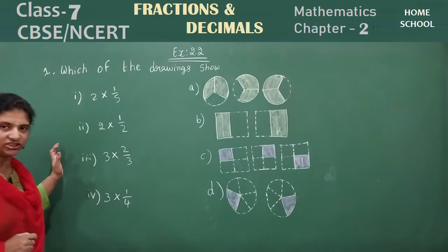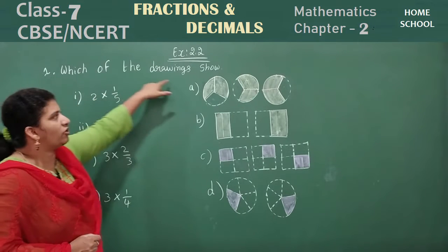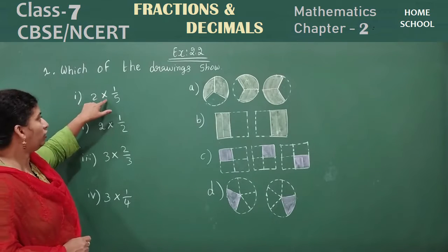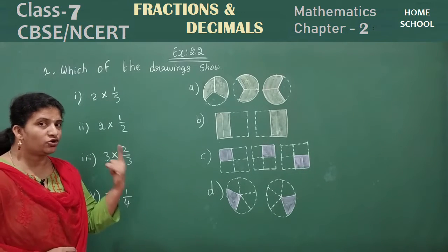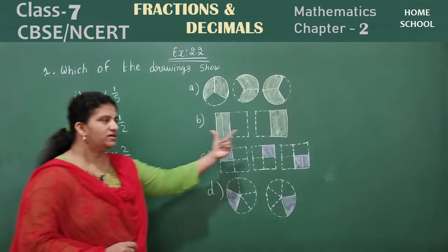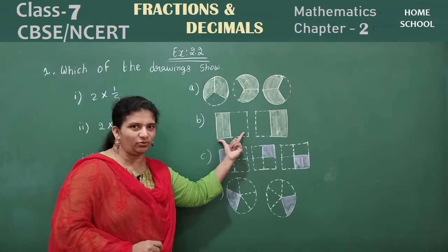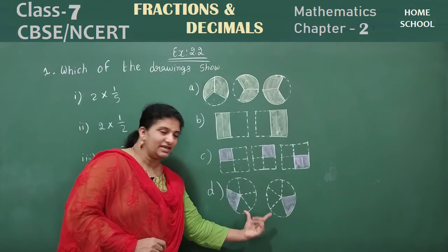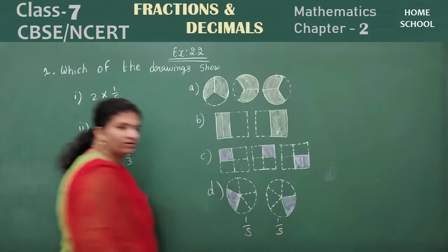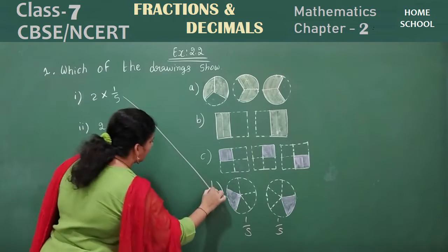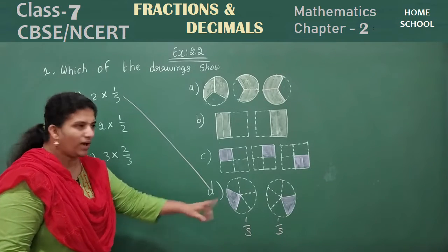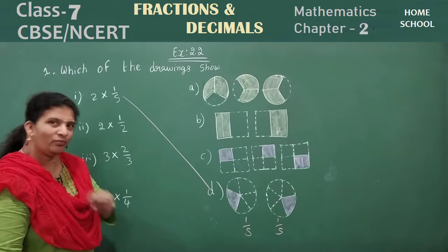Now let's try to match for the given question: which of the drawings show the fractions? For 2 into 1 by 5, there are 2 figures each showing a fraction of 1 by 5. Observe — where do you have 2 figures with 1 by 5? Yes, there are 2 circles each with a ratio of 1 by 5. So this matches the fraction 2 into 1 by 5.